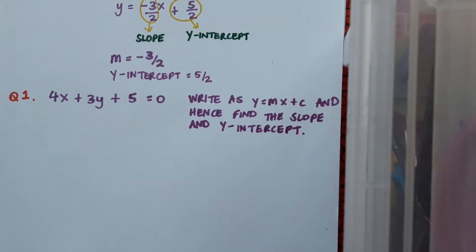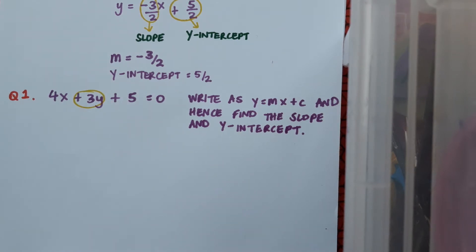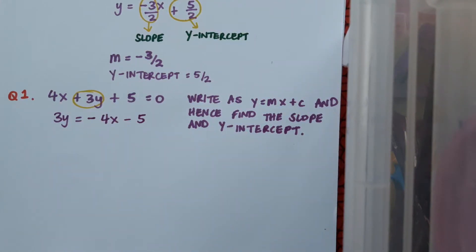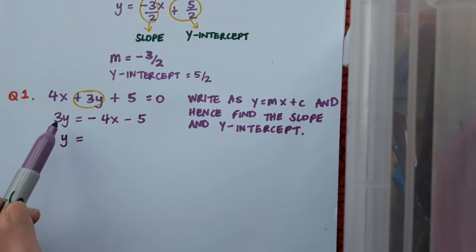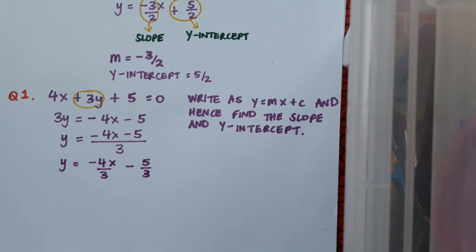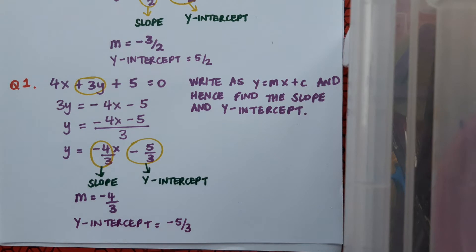First of all, isolate the y-term. I want to get that 3y by itself, and it's already positive, so I'm happy with that. So 3y on the left-hand side, and I'll move the other two terms to the right — they're both positive where they are, so they'll both become negative when they go over. So 3y equals minus 4x minus 5. Now I want to get y by itself, so I bring the 3 — which is multiplying — across to divide everything on the right-hand side, then split the fraction: y equals minus 4 over 3 x minus 5 over 3. The slope is the coefficient of x, so m equals minus 4 over 3. The constant at the end is the y-intercept, so the y-intercept equals minus 5 over 3. It's very important to include that negative in the solution.